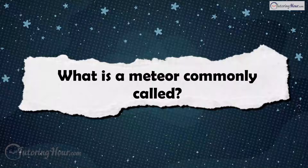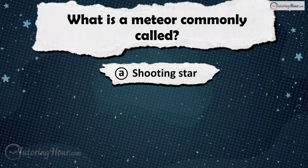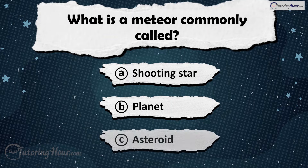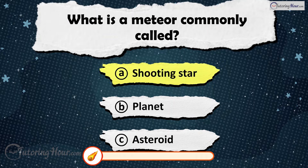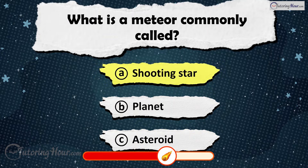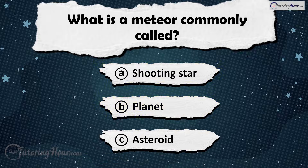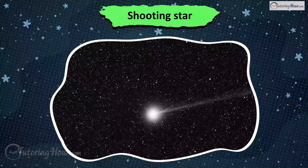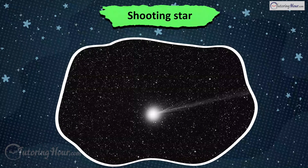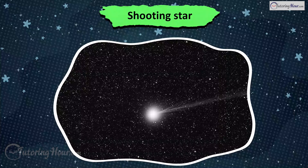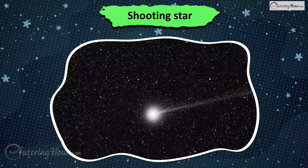What is a meteor commonly called? Is it A) Shooting Star, B) Planet, or C) Asteroid? The answer is Shooting Star. Meteors are streaks of light in the sky, often mistaken for stars.